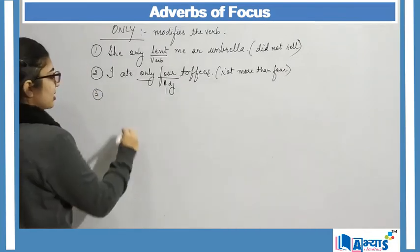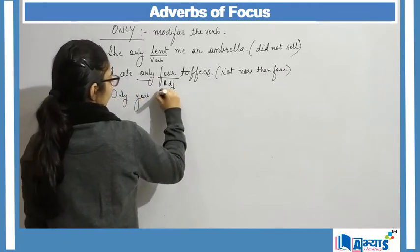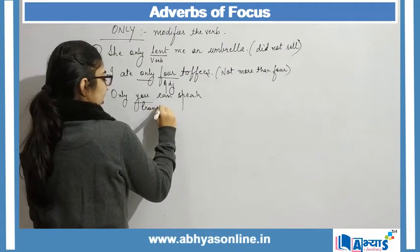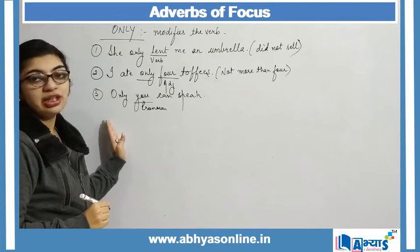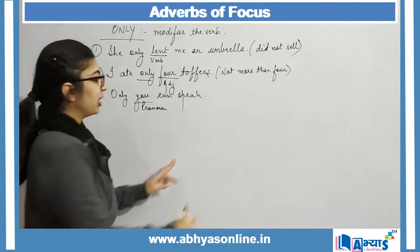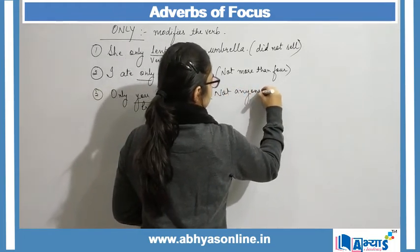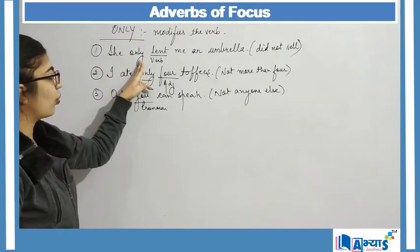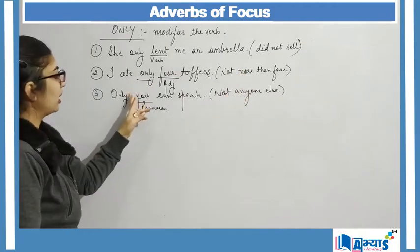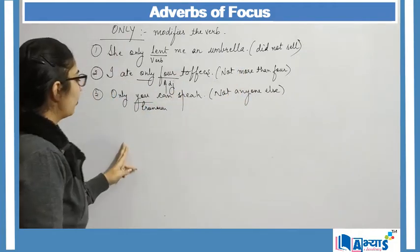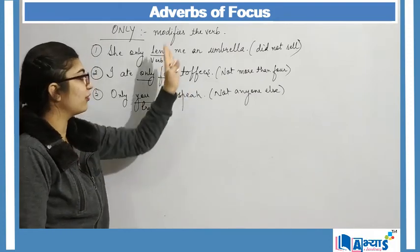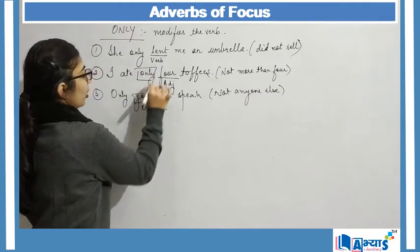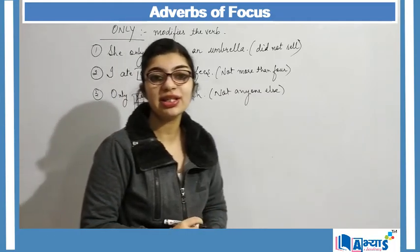Another example: Only you can speak — here 'you' is my pronoun, and 'only' is used before a pronoun. The meaning is: not anyone else is allowed to speak, only you can speak. We can notice that 'only' used with a verb gives a different meaning, with an adjective a different meaning, and with a pronoun yet another different meaning — the placement of 'only' changes the meaning completely.